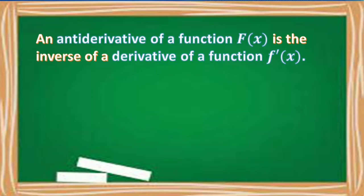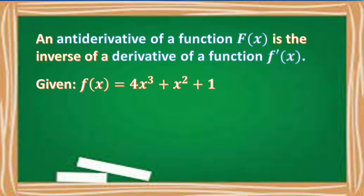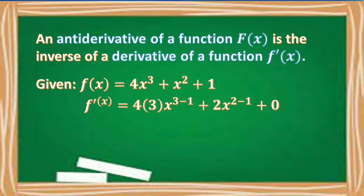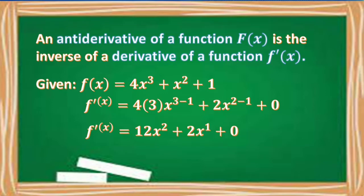Let's first review how to find the derivative of a function. Say if we have F of x is equal to 4x cubed plus x squared plus 1. Using the differentiation rules, we have F prime of x is equal to 4 times 3x raised to 3 minus 1, plus 2x raised to 2 minus 1, plus 0. Simplified, F prime of x is equal to 12x squared plus 2x.